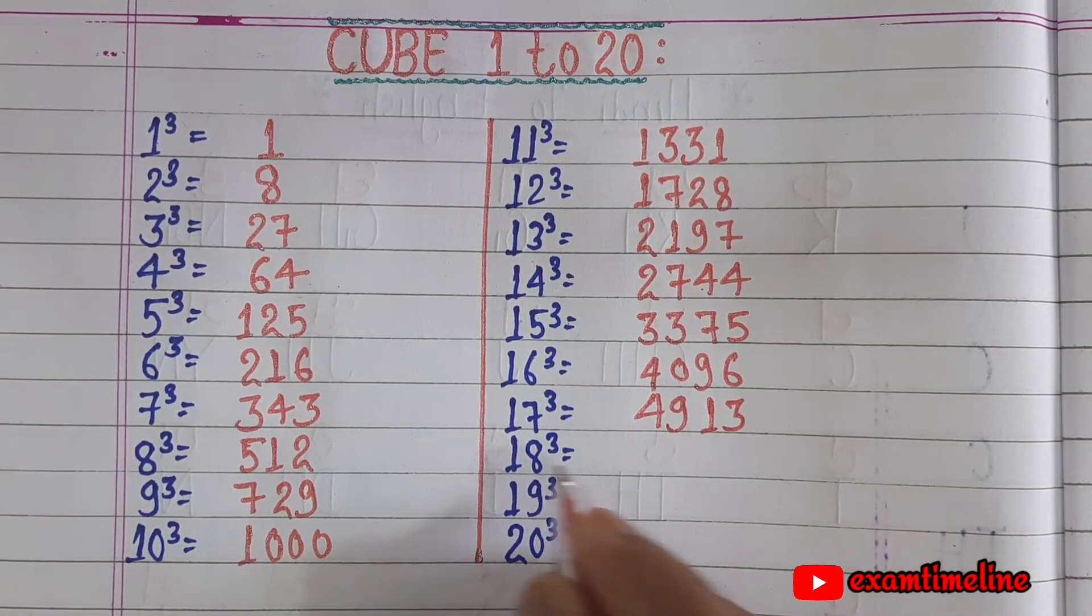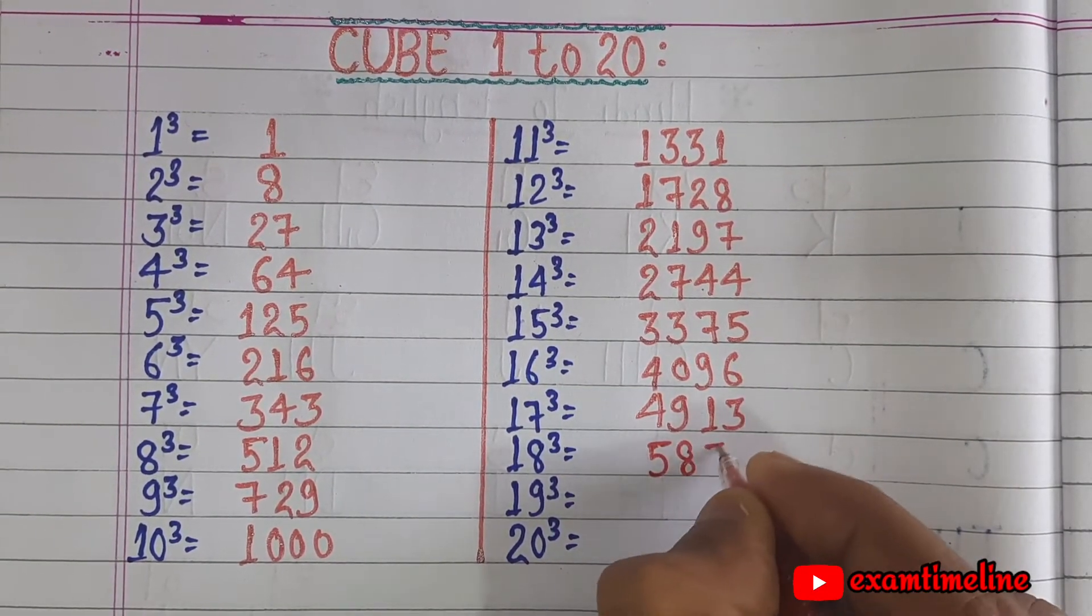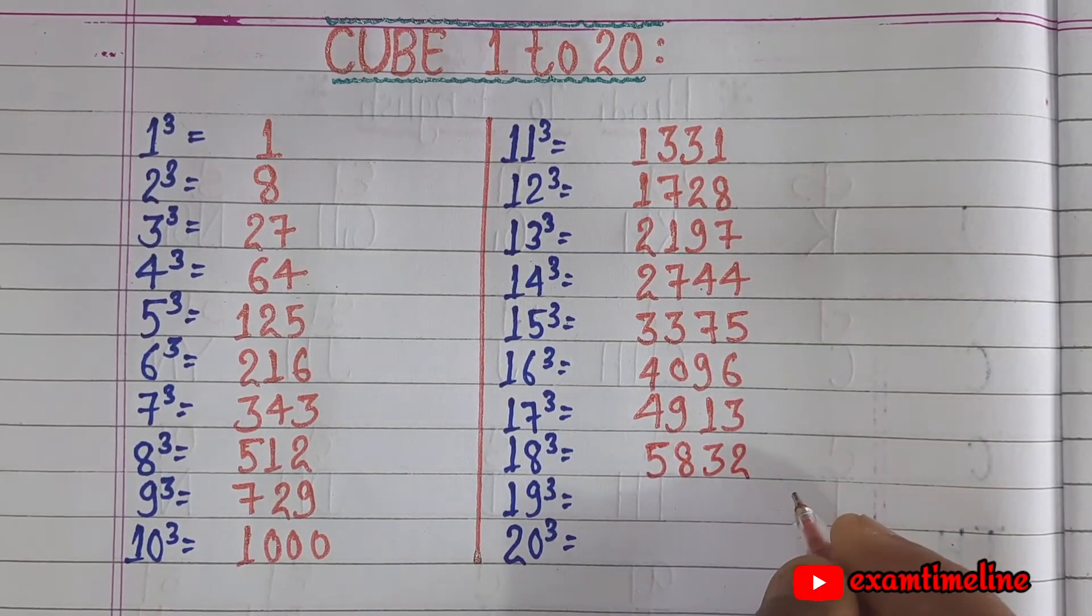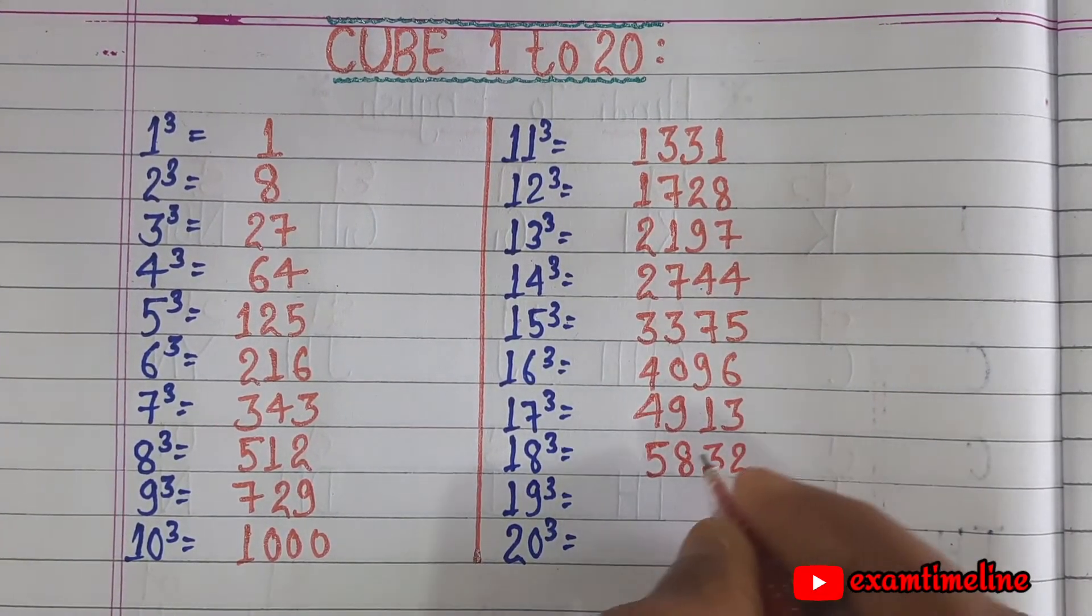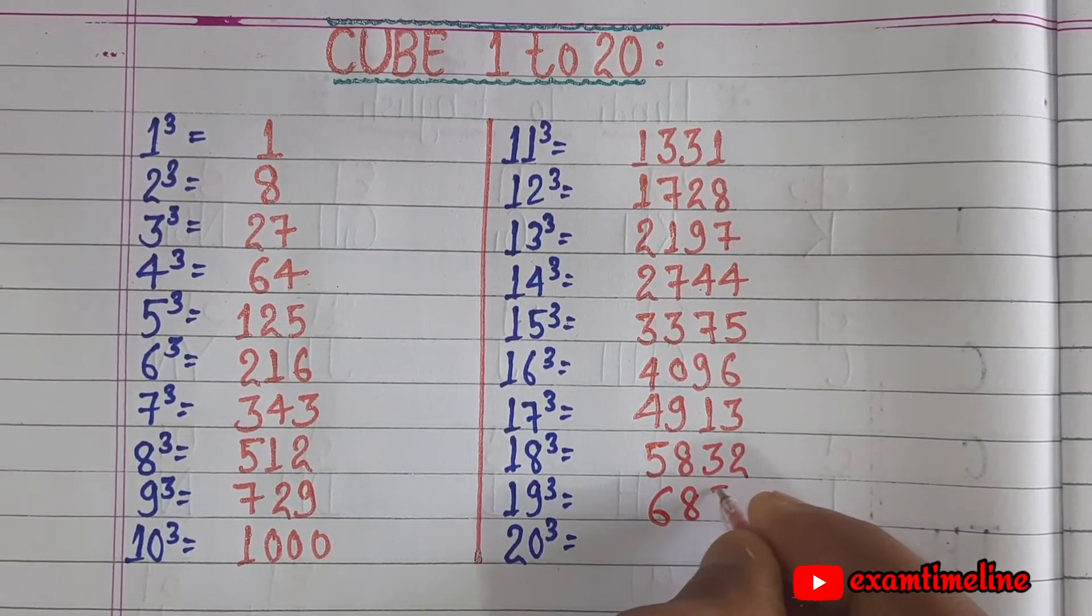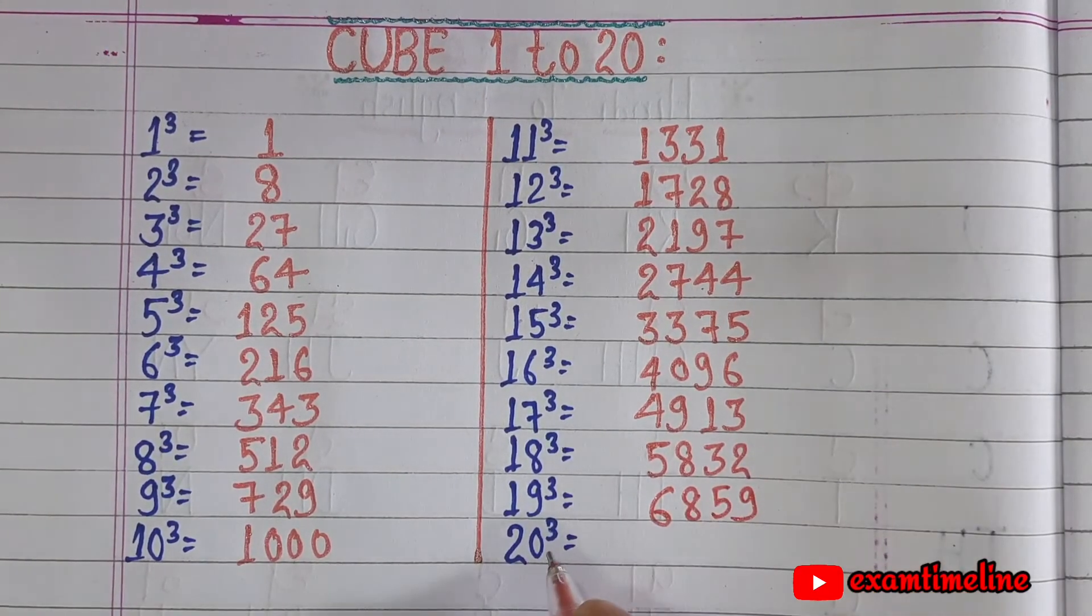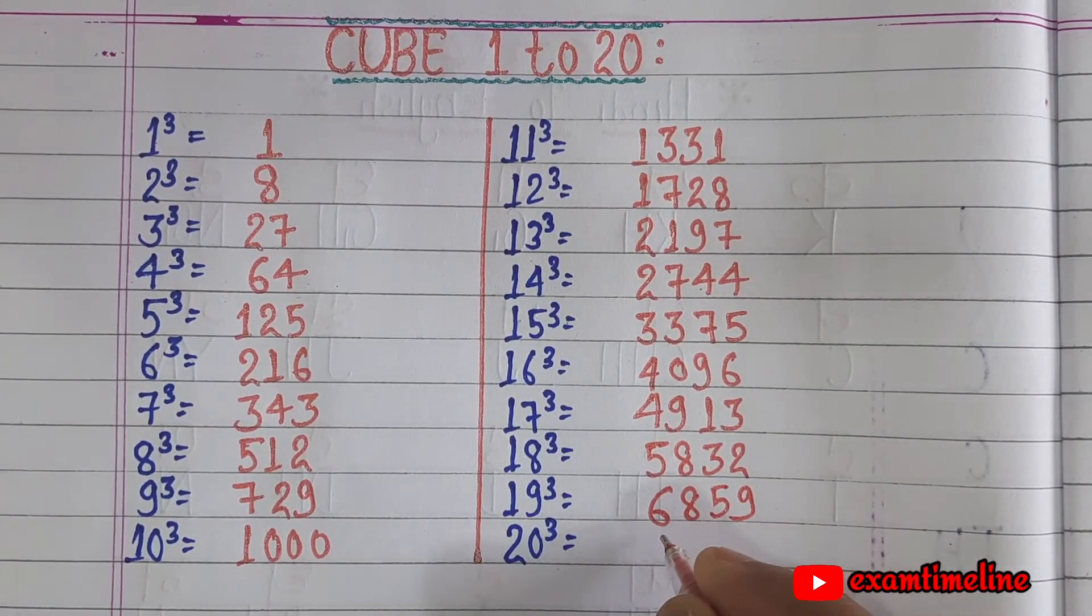18 cube equals 5832, 19 cube equals 6859, 20 cube equals 8000.